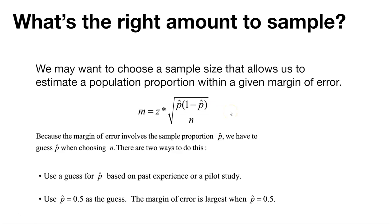So we have to guess what p hat is when we choose n. We don't always know what this is, so we could use it based on past experience or a pilot study. Maybe we know when we go out and sample trees, about 10% of them are always dead. So in this case, if we're looking at the proportion of alive trees, p hat might be 90% or 0.90.